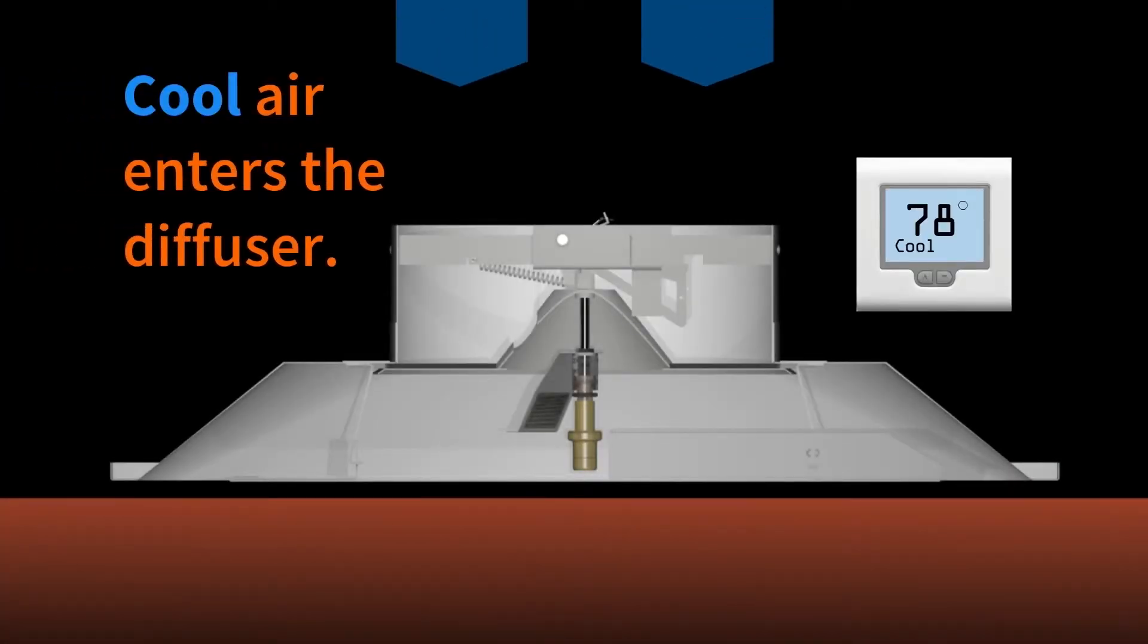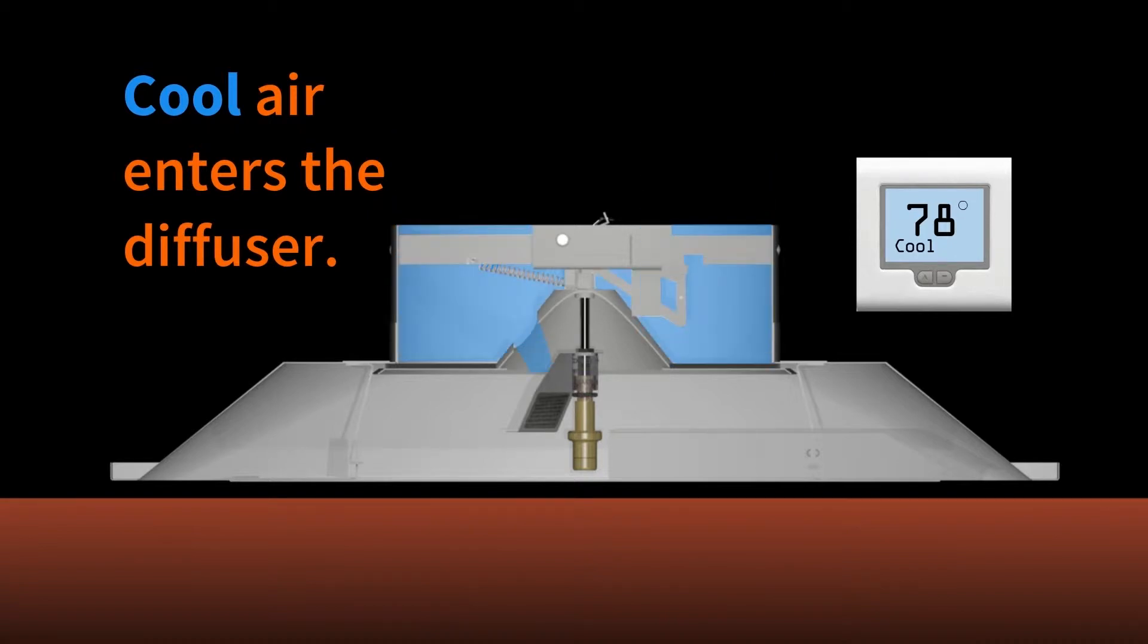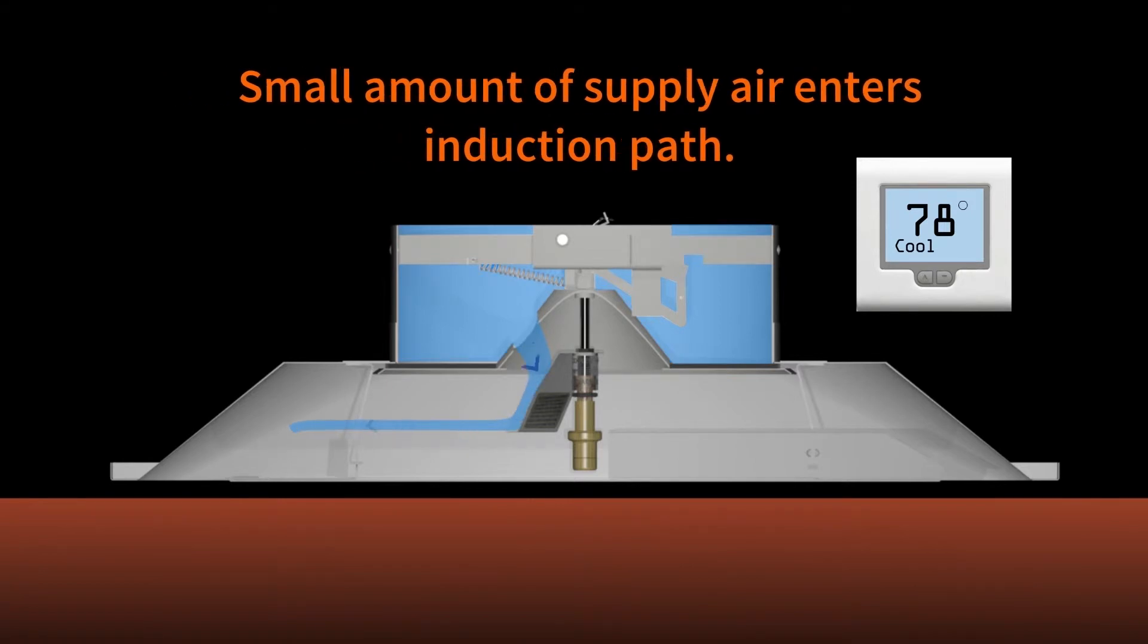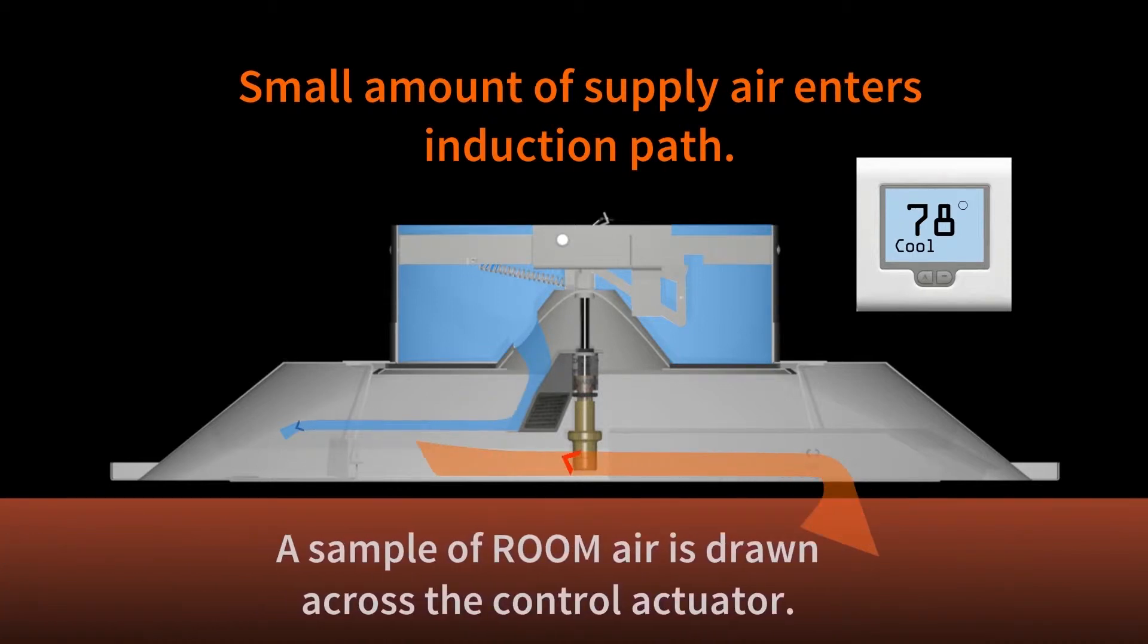In the cooling mode, cool air enters the diffuser. A small amount of supply air passes through a nozzle in the diffusion damper and is diverted back into the primary air path. This creates just enough negative pressure to induce a constant sample of room air across the thermal actuators.